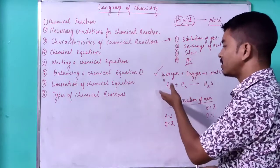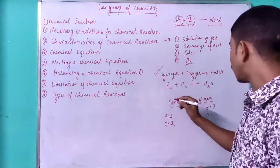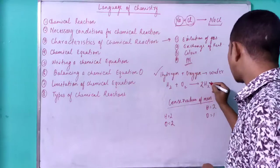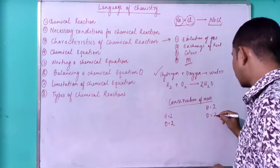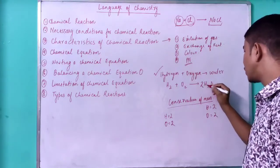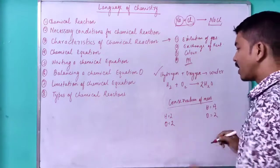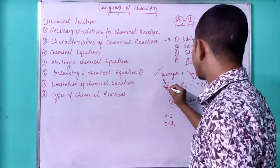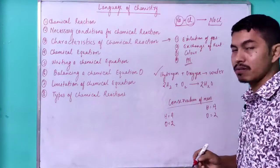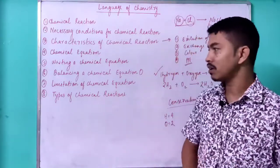A chemical equation can be balanced by adding a coefficient in front of the element. Here, we need to make oxygen 2, so we write 2 in front of H₂O. Now we have 2 atoms of oxygen, but the number of hydrogen increases — 2×2 = 4 hydrogen on the right. On the left we only have 2 hydrogen, so we multiply H₂ by 2, giving 4 hydrogen on the left as well. Thus the equation is balanced: 2H₂ + O₂ → 2H₂O. It is necessary to balance a chemical equation because of the law of conservation of mass.